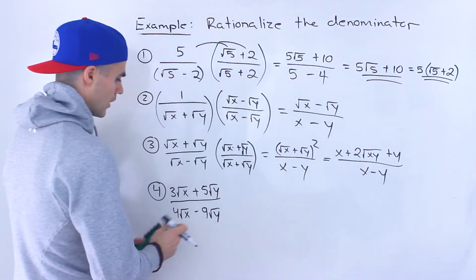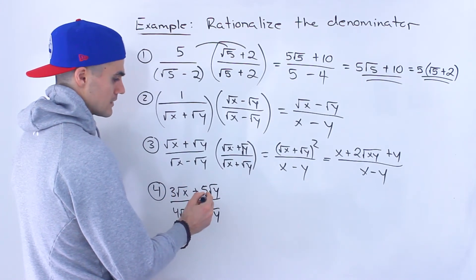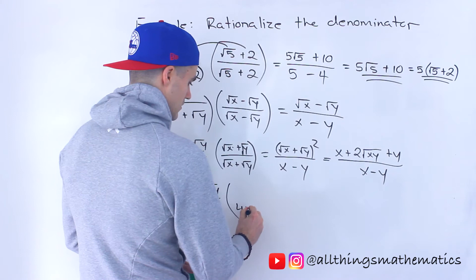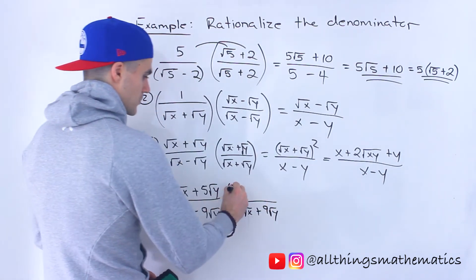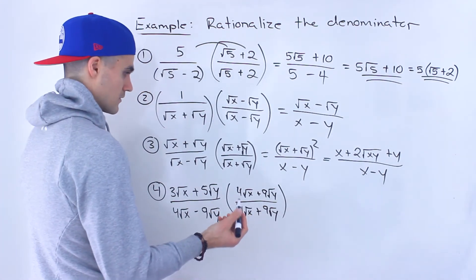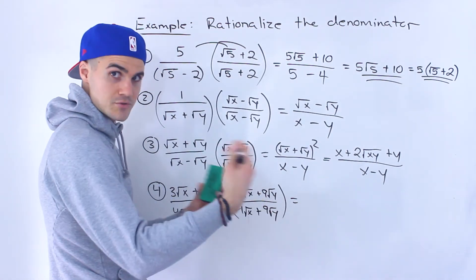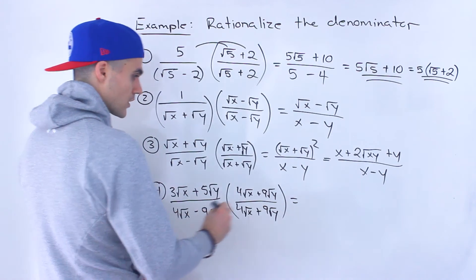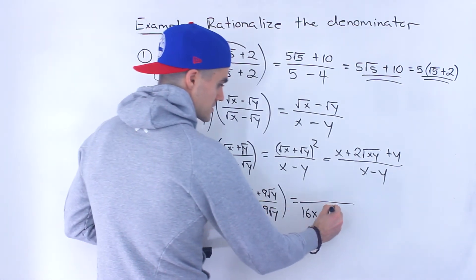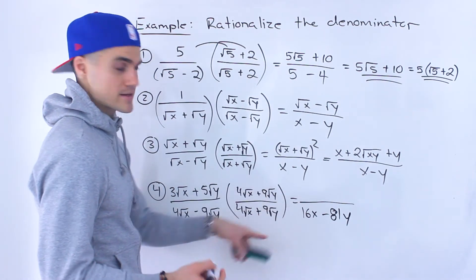Finally number four — a little bit more going on here. We got 4 root x minus 9 root y in the denominator, so we're going to have to rationalize that. Then we got 3 root x plus 5 root y in the numerator. The conjugate of the denominator is going to be 4 root x plus 9 root y, and we're going to multiply the top by the same thing. We just changed that sign in the middle. Multiplying by the conjugate, the middle terms cancel, so we just multiply the ends: 4 root x times 4 root x gives us 16x, then minus 9 times positive 9 gives us minus 81, and root y times root y gives us y. So 16x minus 81y is the denominator.